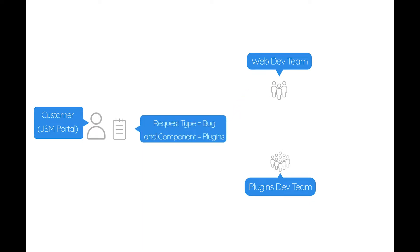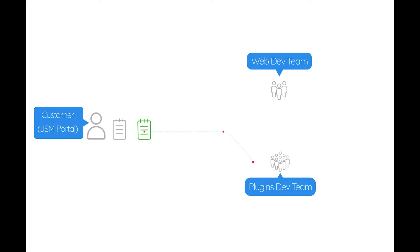In the second use case, the request type is bug and the component is plugins. This will create and link a new development task for the plugins development's JIRA project.